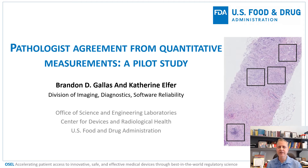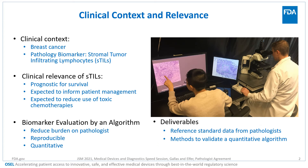I created this video to talk about pathologist variability and agreement from a pilot study. Let's start with the clinical context of this work. It's breast cancer, specifically a pathology biomarker called stromal tumor infiltrating lymphocytes, and it goes by the moniker S-TILs. The clinical relevance of S-TILs is that it's prognostic for survival, and it's expected to inform patient management.